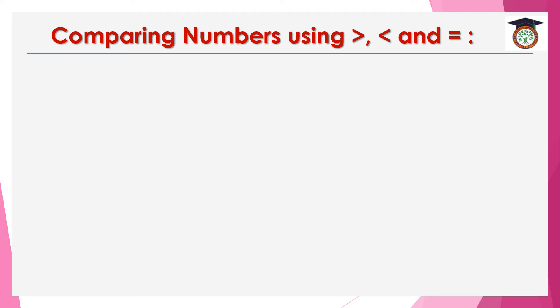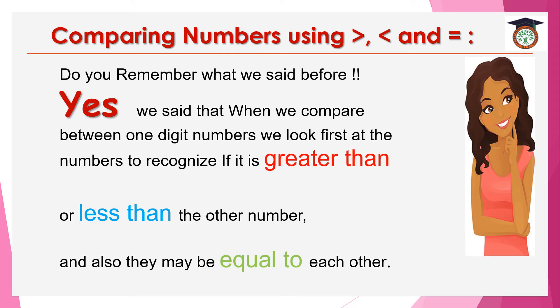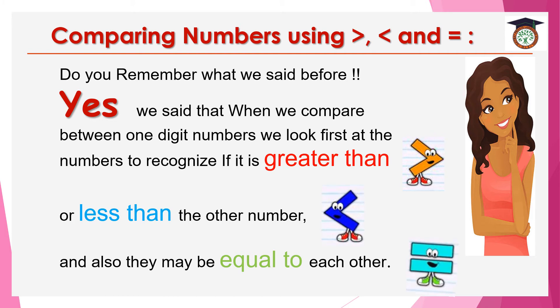Do you remember what we do? When we compare between one-digit numbers, we look first at the numbers to recognize if it's greater than or less than the other number, and also they may be equal to each other.